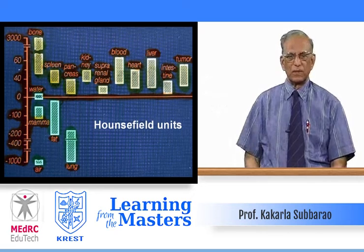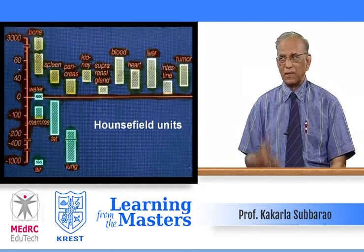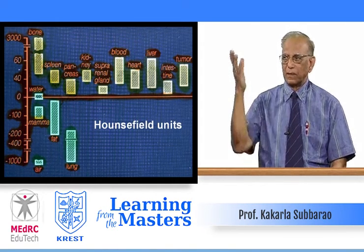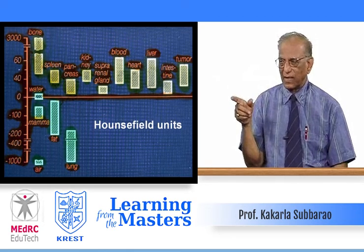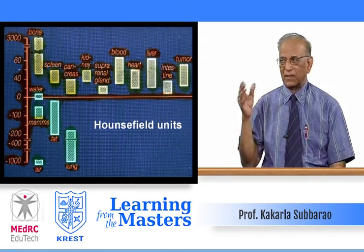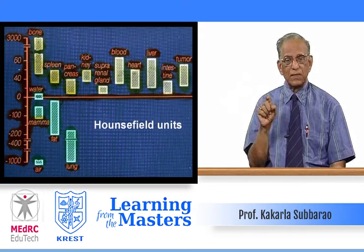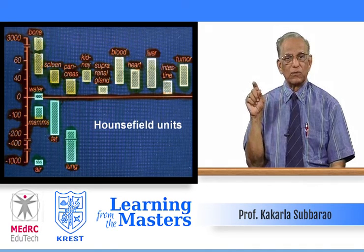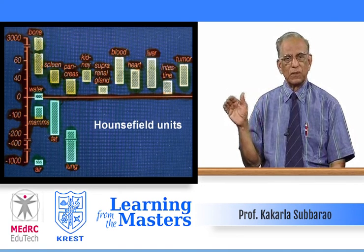These are Hounsfield units — in CT, densities are measured in Hounsfield units, unlike ultrasound which uses echo terminology. For example, bone is approximately 3000 Hounsfield units, while fat and air are around minus 1000. Water is taken as zero; organs like spleen and pancreas are near zero. The lung is negative because it contains air. Fat is negative. So you measure CT densities in Hounsfield units — a reading of 2500 means bone; minus 200 to 400 suggests fat.